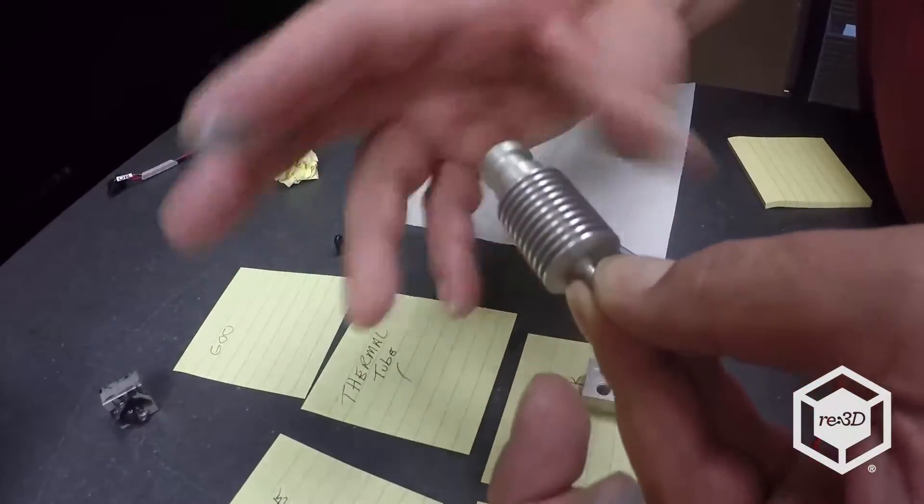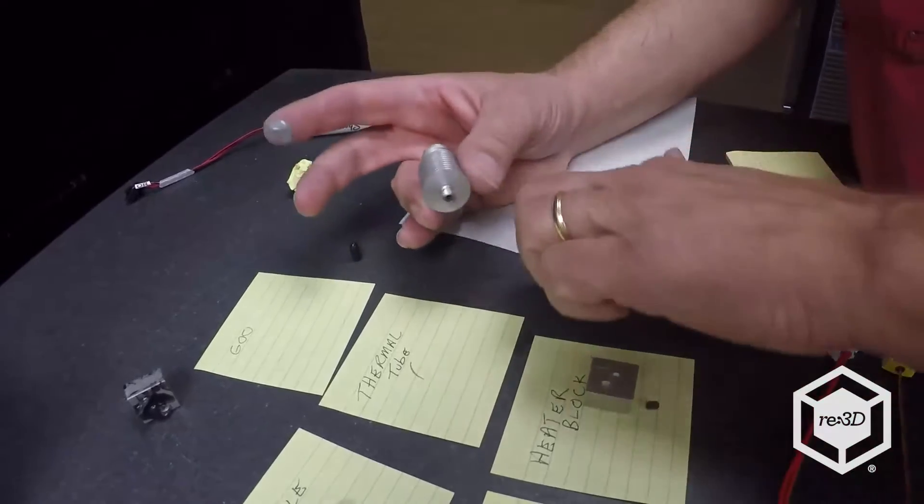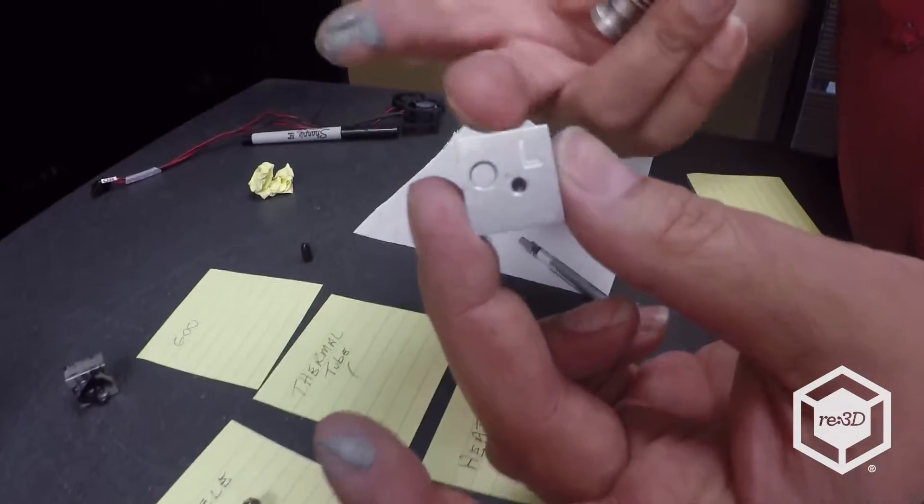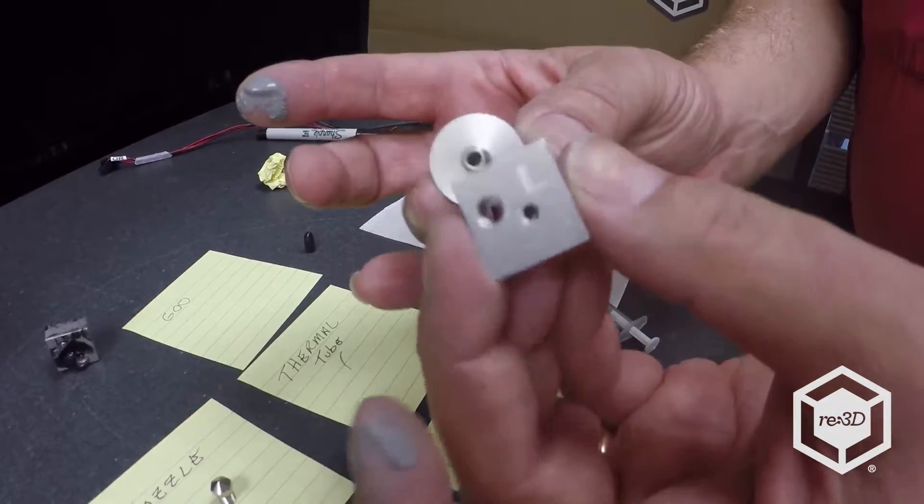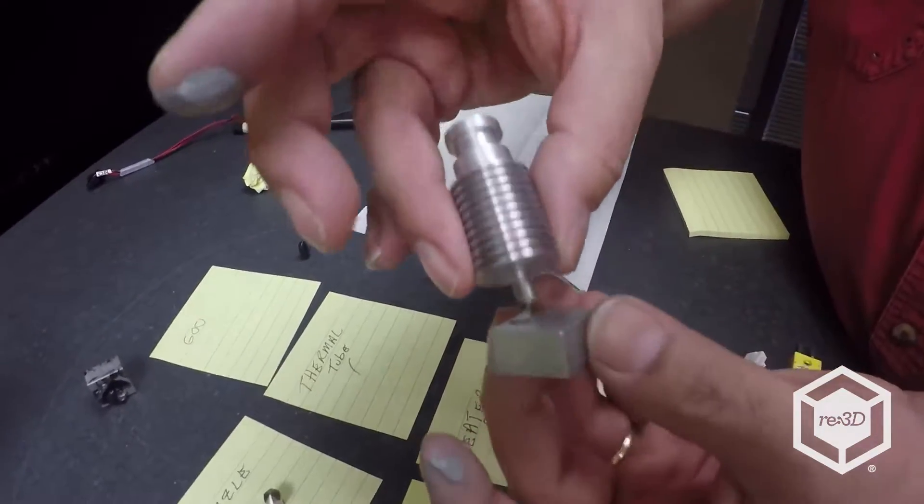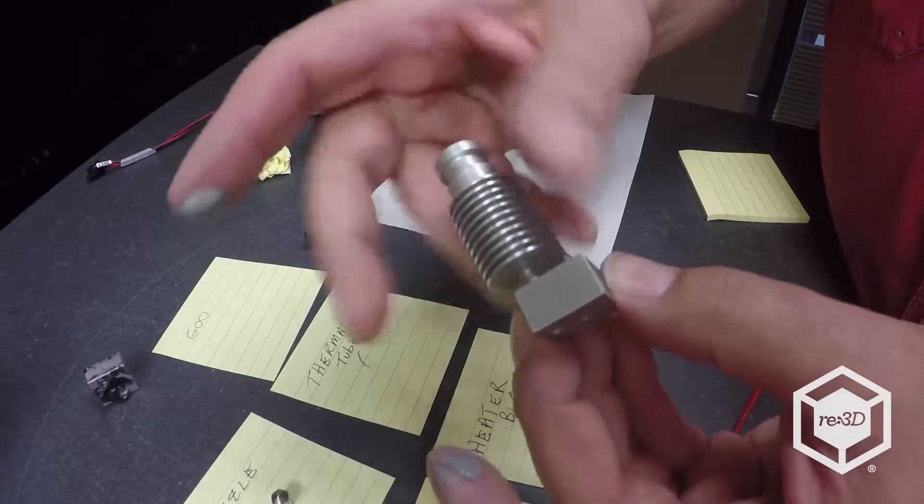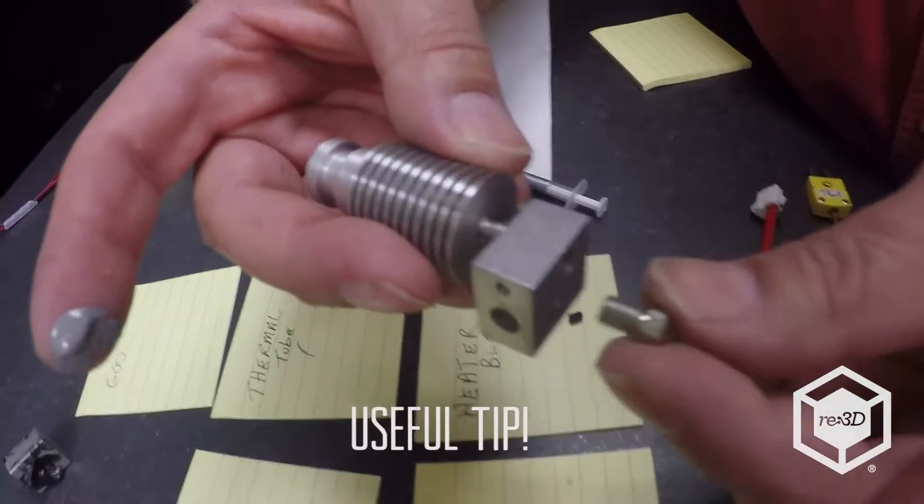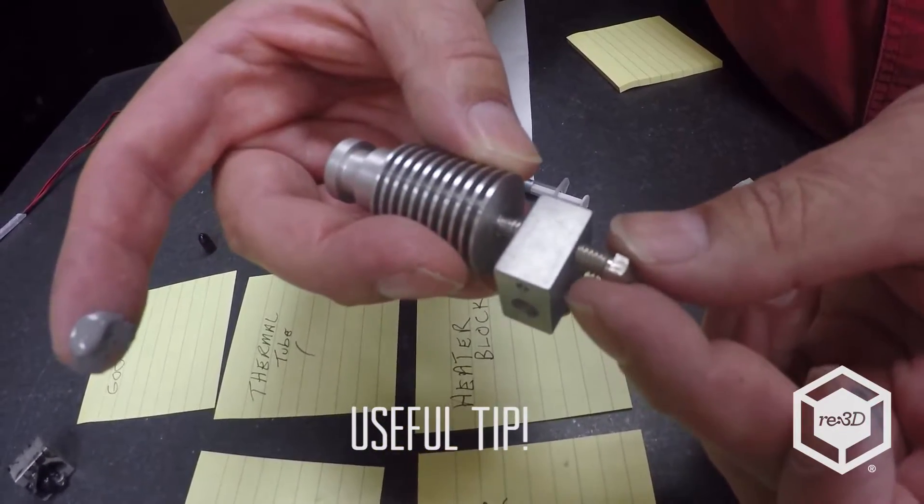Now the next thing we're going to do, it doesn't have to be tight all the way in. We'll get it tight when we put it together. The next thing we're going to add is the heater block. You want to add it such that the letter is facing you and the thermal tube screws in the back. We're just going to get this started because we're also going to add the nozzle.